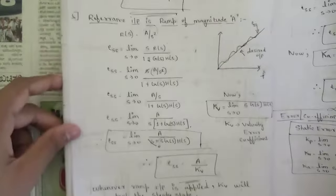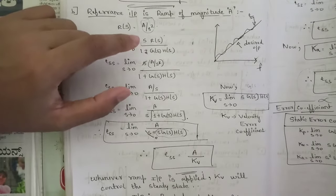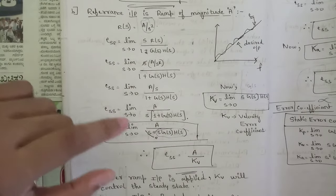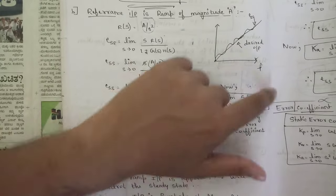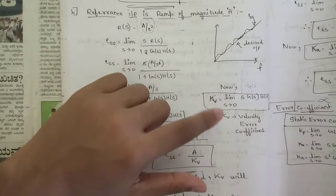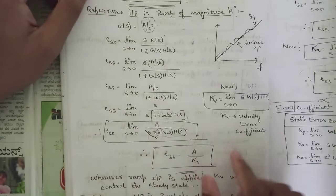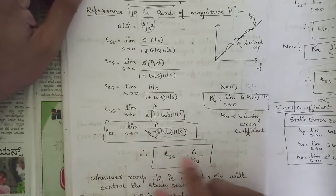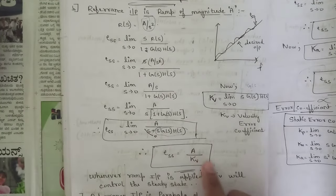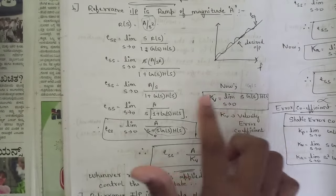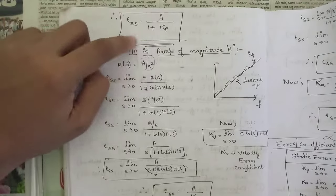For ramp input, R(s) = A/s². Substituting into the formula, we get Kv = lim(s→0) s·G(s)·H(s), called the velocity error coefficient. The steady state error in case of ramp input is then e_ss = A / Kv.